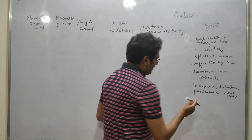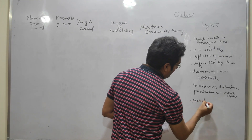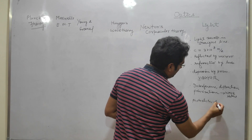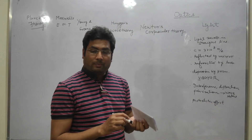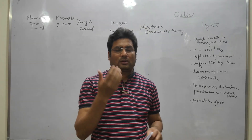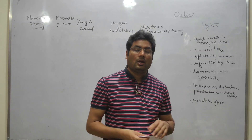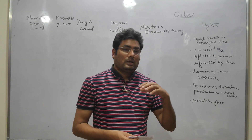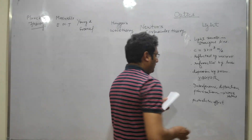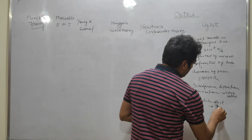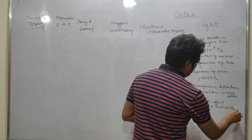The photoelectric effect shows the particle nature of light. What is the photoelectric effect? When light falls on a metal, it causes emission of electrons from the surface of the metal. This phenomenon is the photoelectric effect, and it proves the particle nature of light.